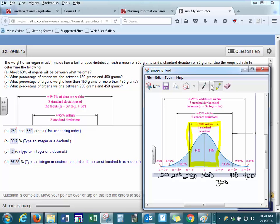The second question is: what percentage of organs is between 150 and 450? Looking down at the bottom, 150 is here at three standard deviations, and 450 is here at positive three standard deviations. So we follow this up to the top of our chart.